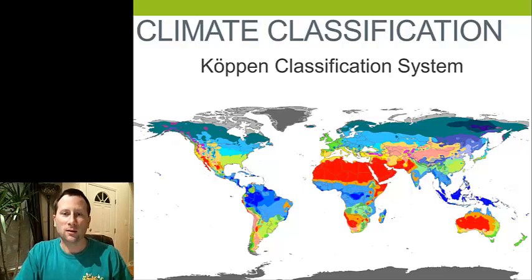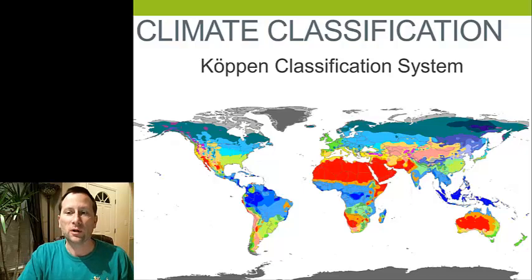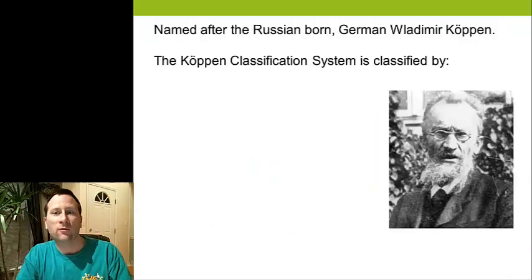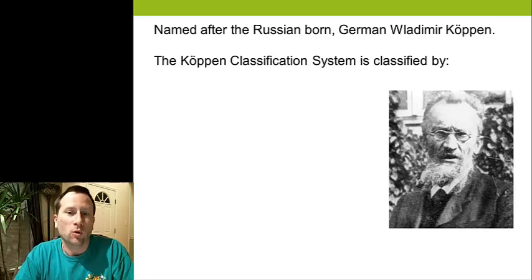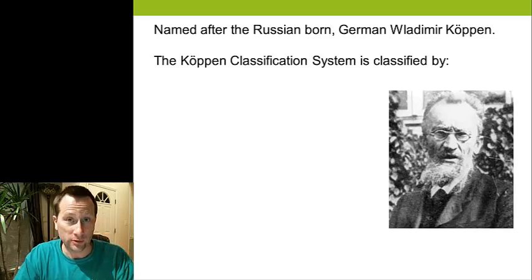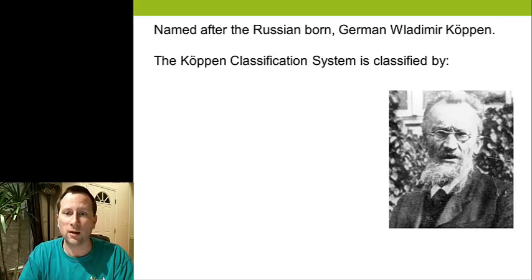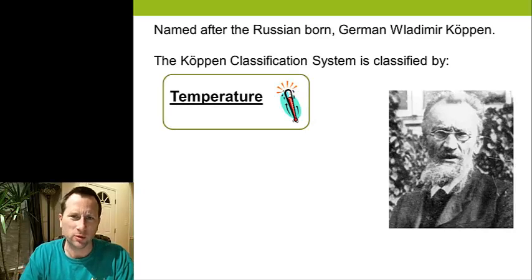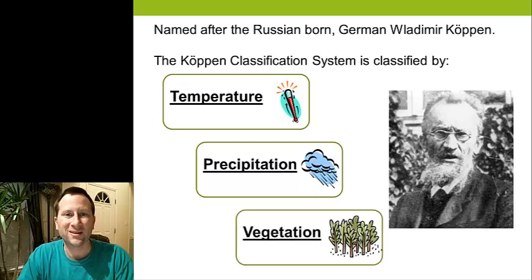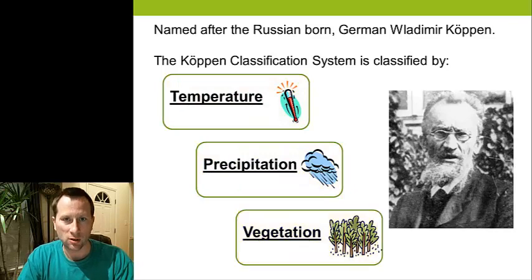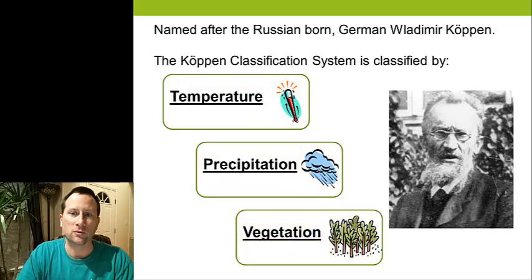The main way that climate is classified around the world is something called the Köppen climate classification system. It's named after a Russian-born German named Vladimir Köppen. The Köppen classification system uses three things to classify climate. The first is temperature — that makes sense, most people when you think about the climate of Florida, it's warm. The second is precipitation. The third is probably the least intuitive for most people, and it incorporates vegetation. So we're talking about temperature, precipitation, and vegetation all used to define separate climate areas around the world.